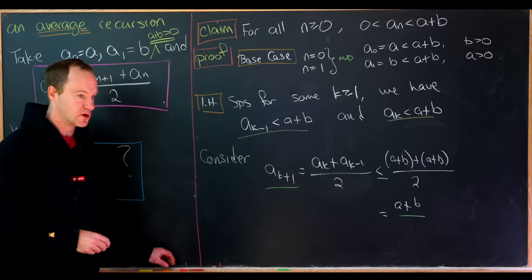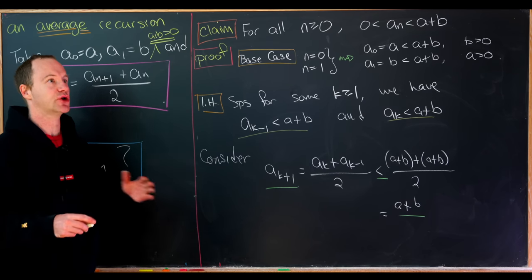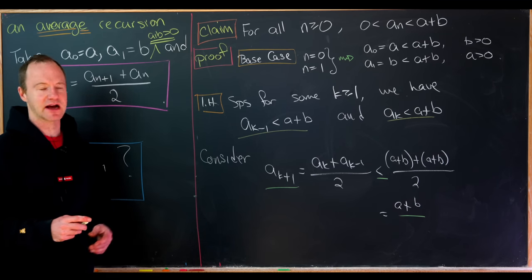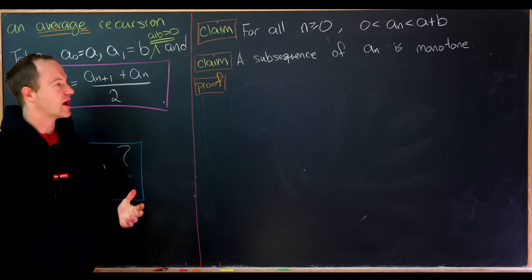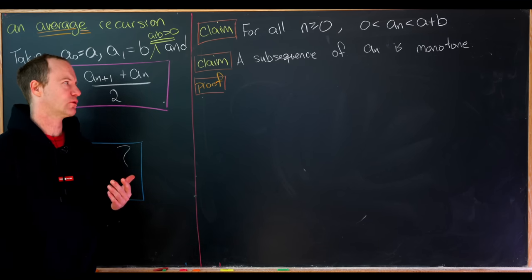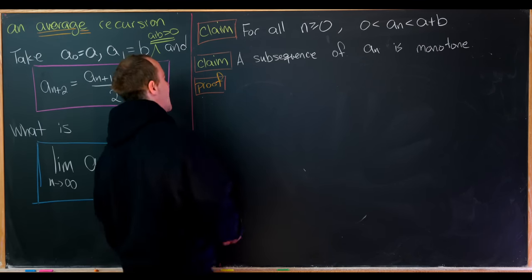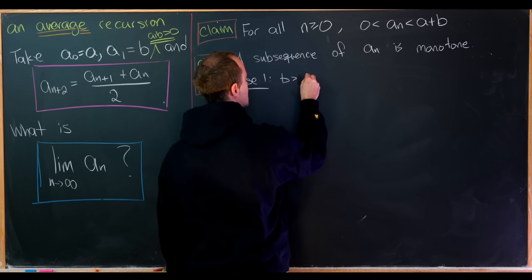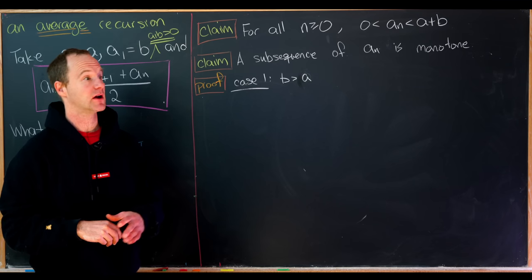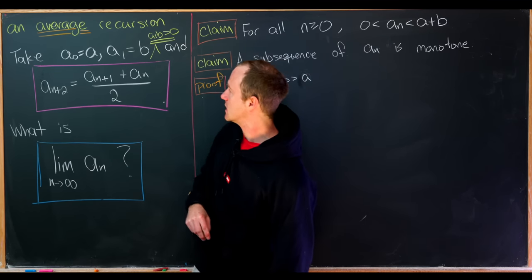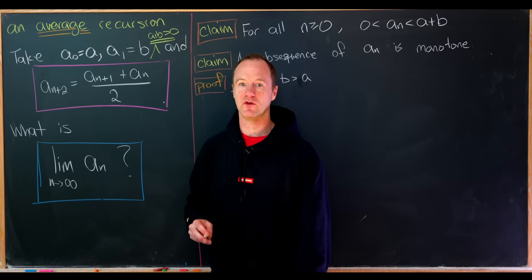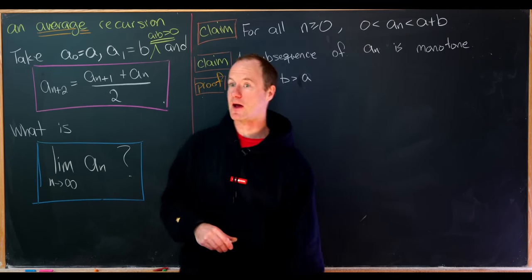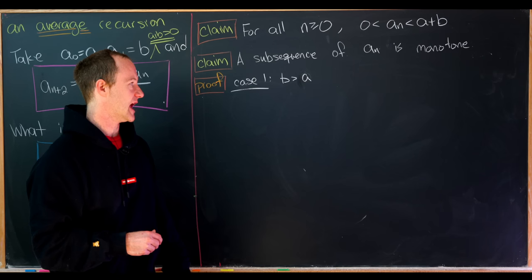Now we'll show the sequence is monotone — actually it's a bit of both increasing and decreasing, so we'll show that a subsequence is monotone. If a = b the sequence is constant and trivially converges. The interesting cases are when b > a or a > b.